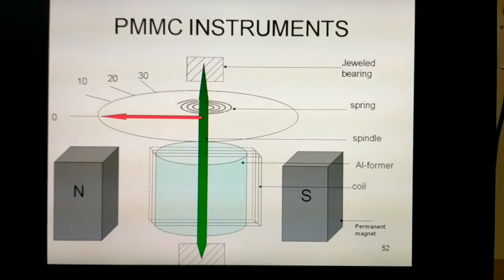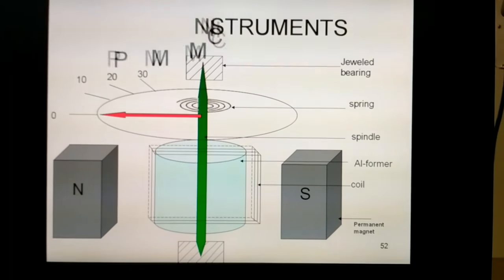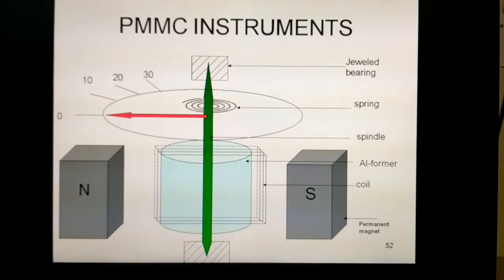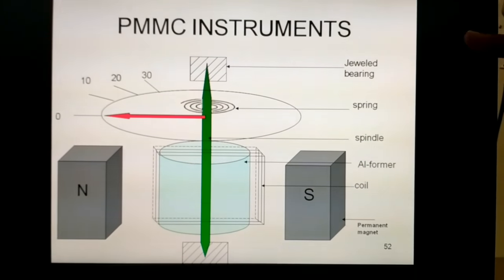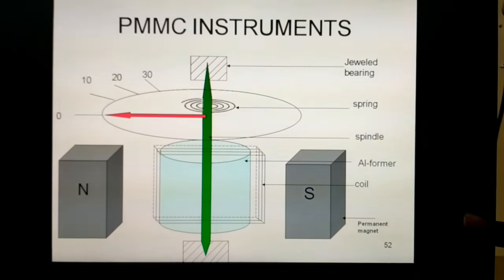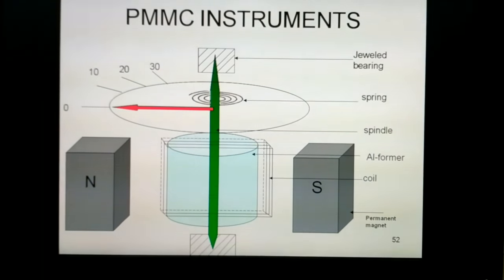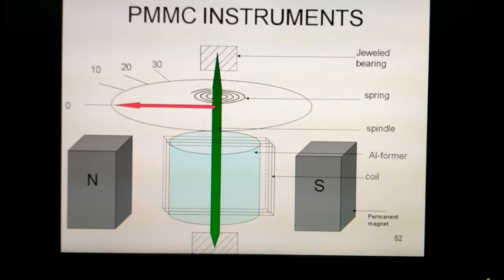I will elaborate on the permanent magnet moving coil instrument, PMMC. Now see the different parts of the instrument. The main important part is the pointer, this one which is pointing out the different values so that we can read it.